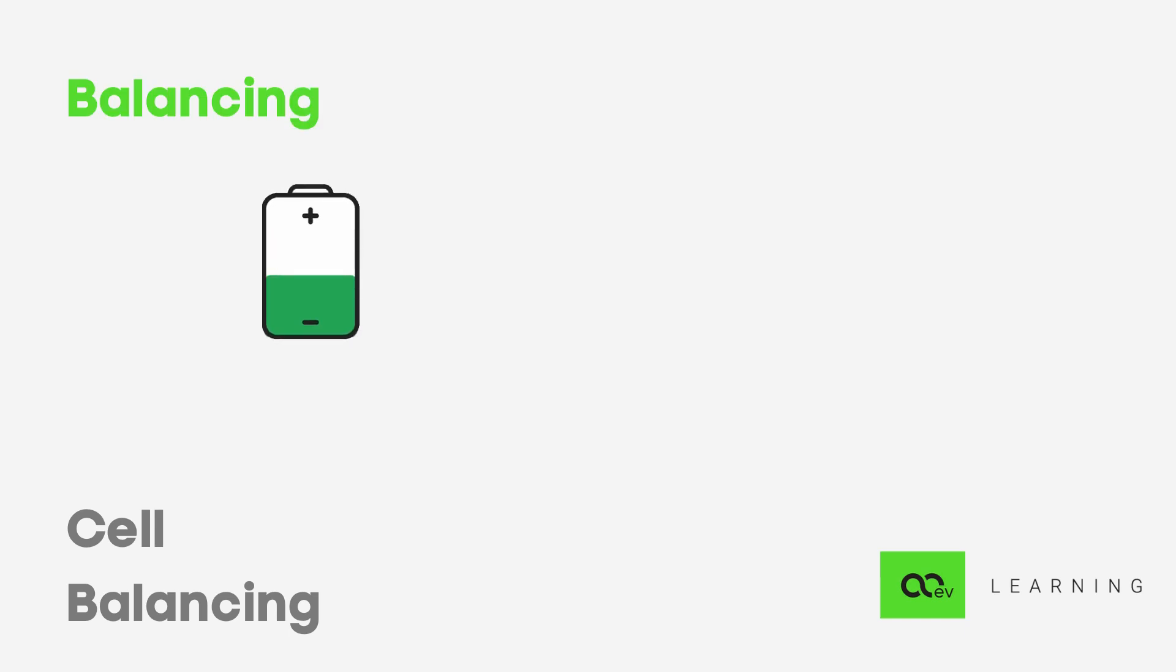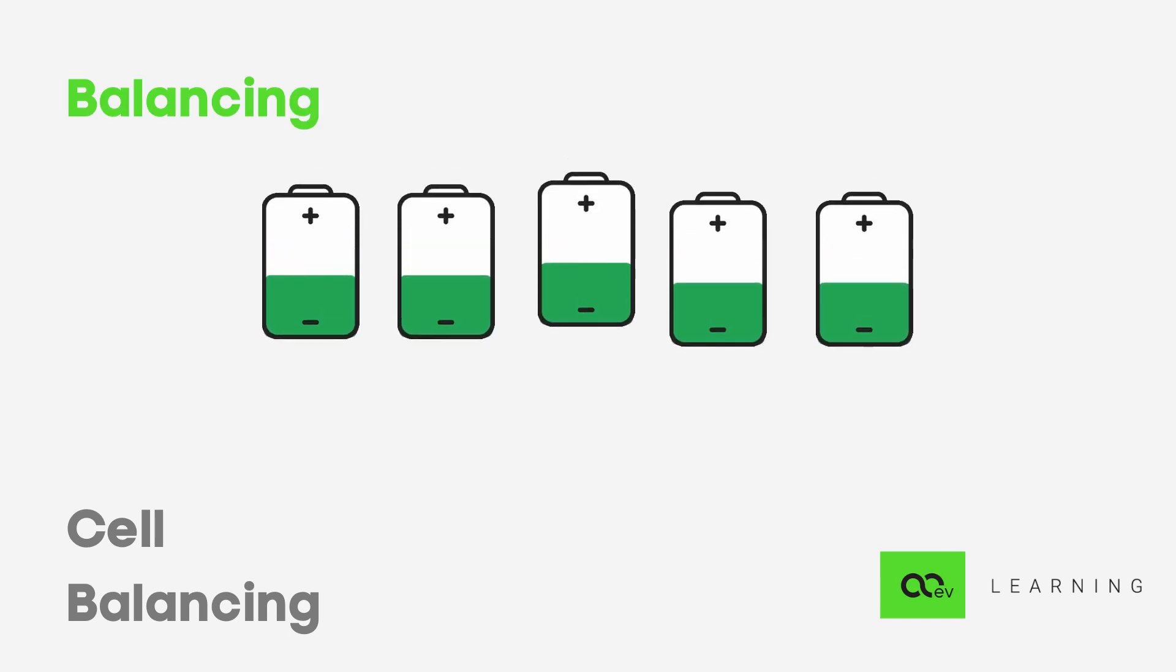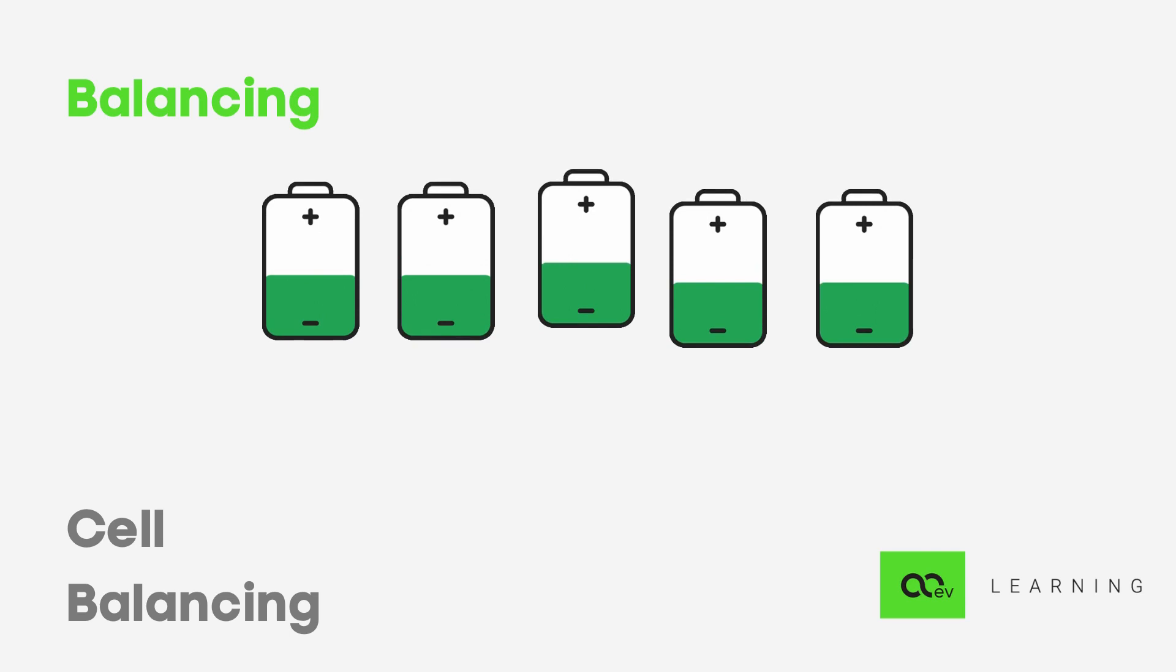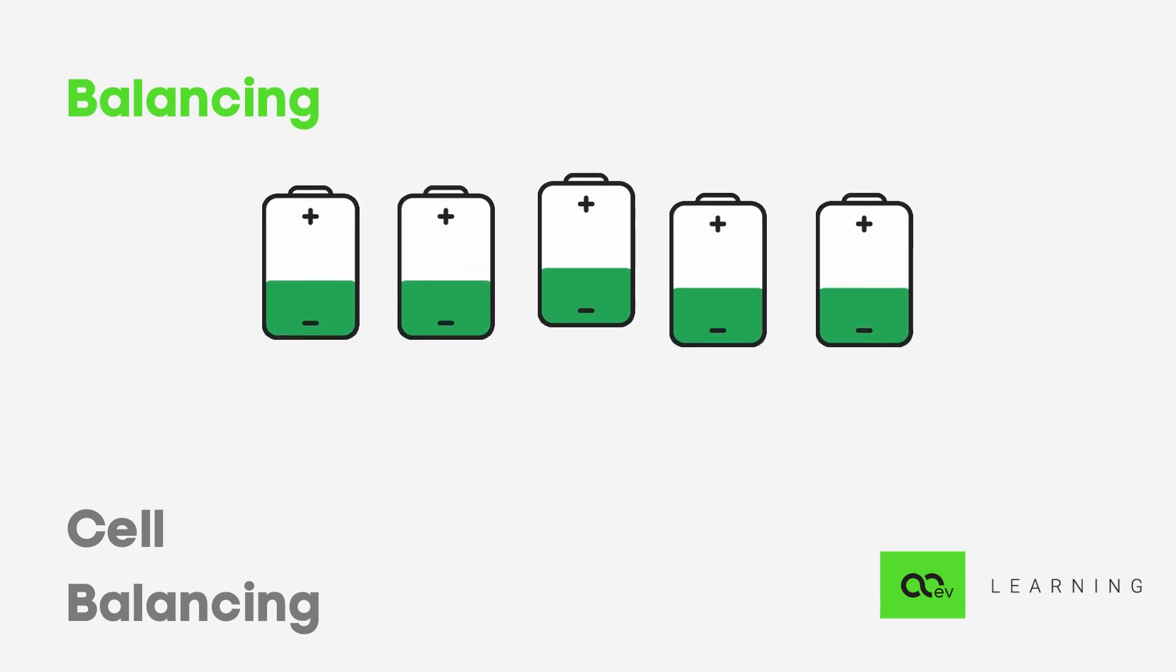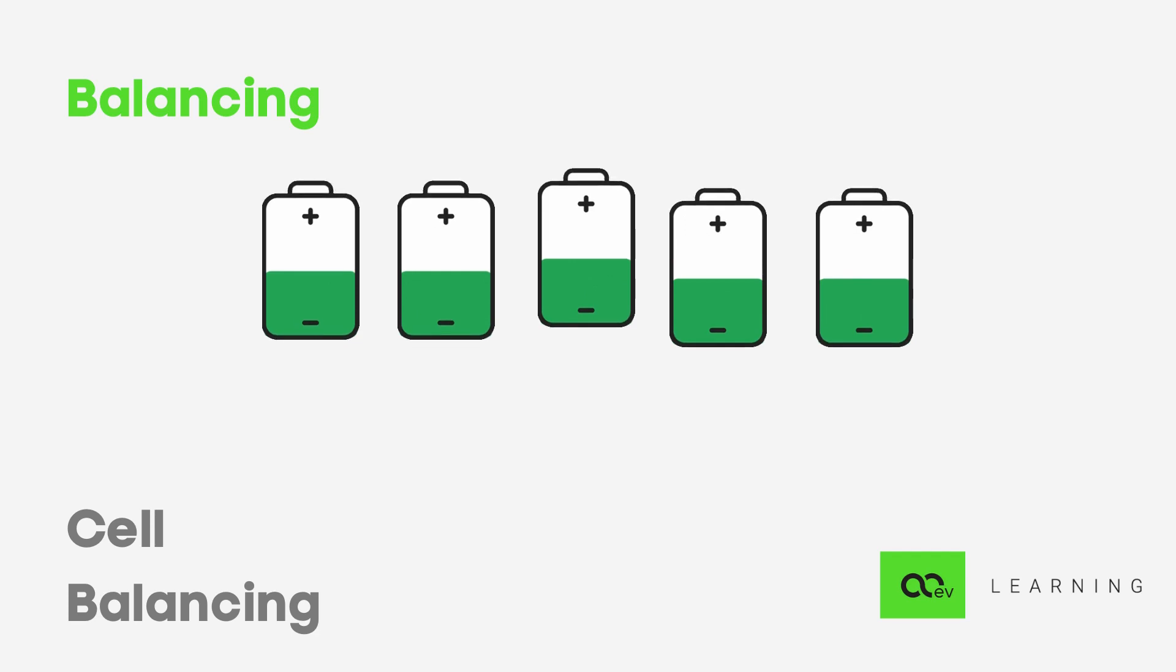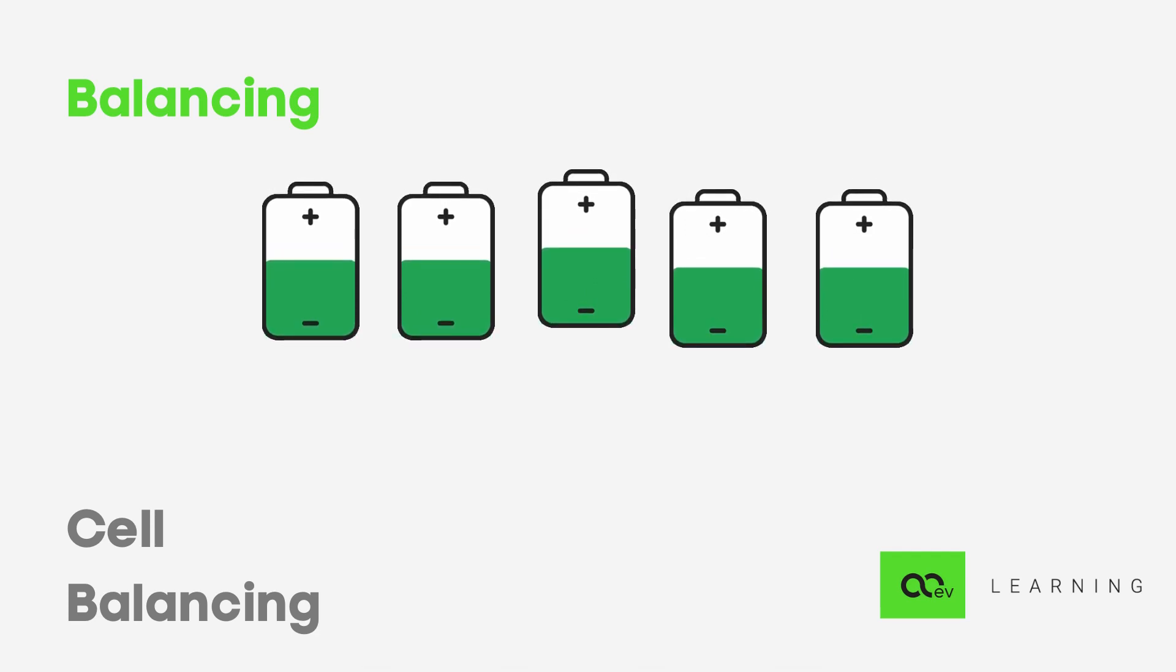When you group together several cells to power a device, you need to do balancing. The reason is that as the battery pack goes through its life cycle, the cells usually don't get discharged or charged at the same rate.